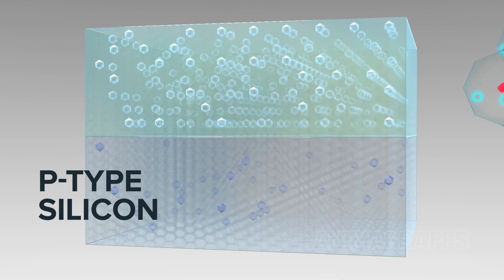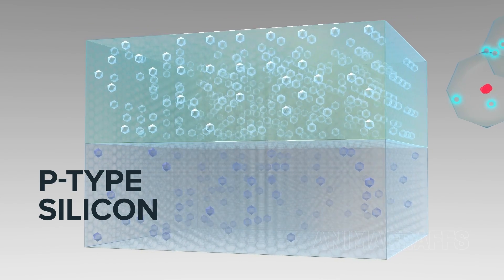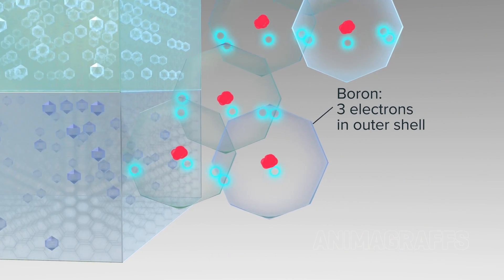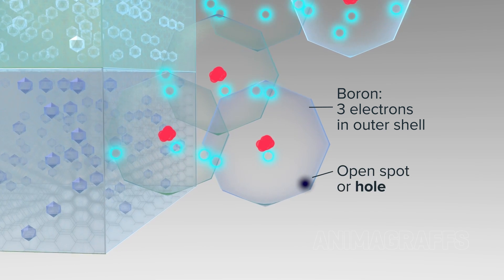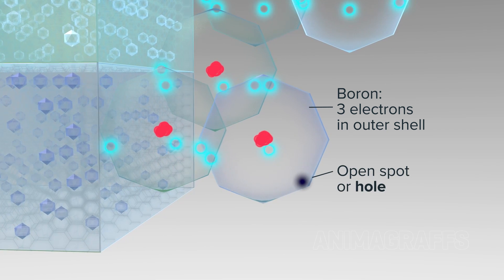P-type silicon, P for positive, is doped with boron, which has three electrons in its outer shell, leaving an extra open space, or hole, when bonding with silicon.